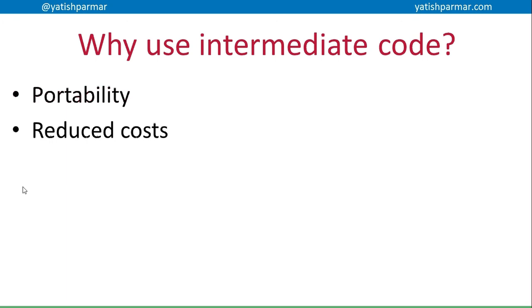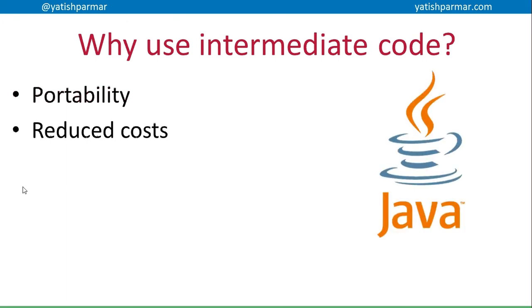This obviously reduces the cost of development because you're not compiling and testing for a range of different CPU platforms, although that reduced cost depends on the fact that you have to create the virtual machine for each architecture in the first place. The knock-on long-term cost is obviously reduced. An example of this is Java — on the Java website their slogan is something like 'compile once, run anywhere.' Java compiles down to bytecode, and you can actually open up your compiled code and decipher what's going on in there.